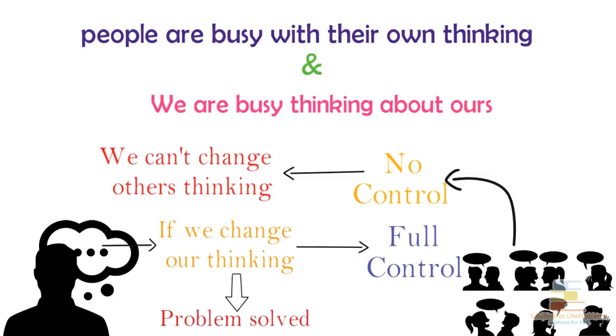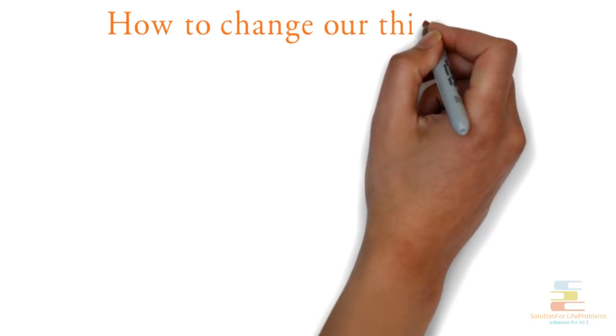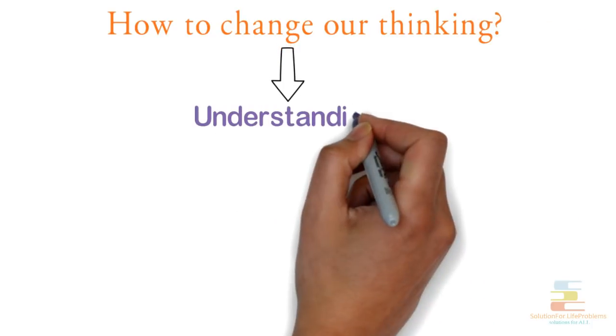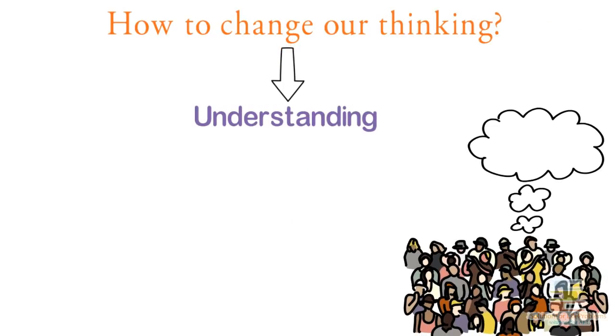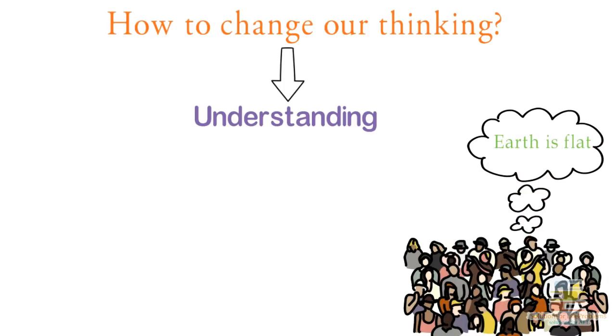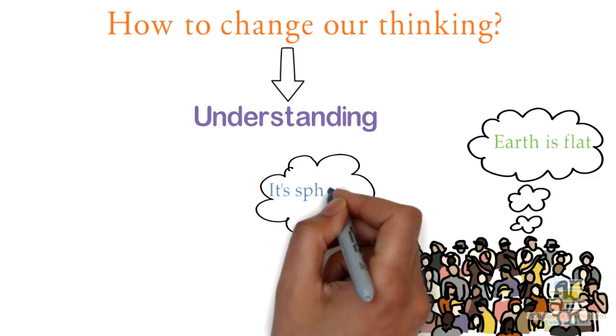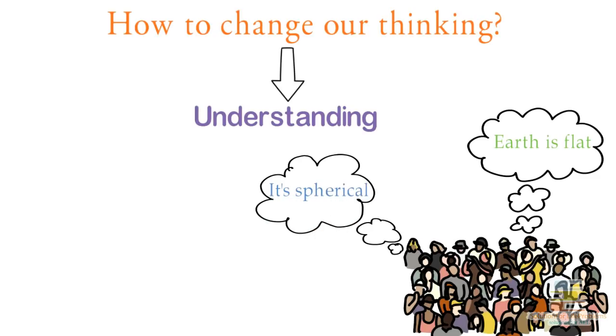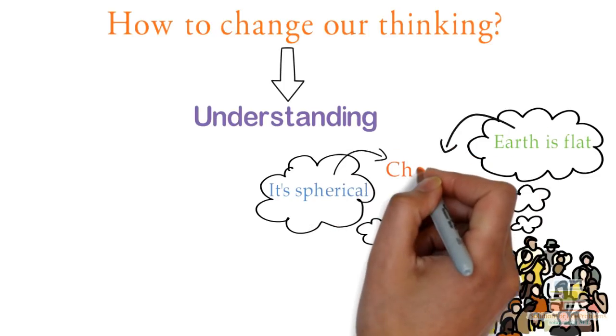Because if we can change our own thoughts where we have the full control, we can solve this problem easily. Now the question comes, how to change our thoughts? So thoughts are changed by our understanding. When people used to think that the earth is flat, then they were thinking about it from one perspective. But as soon as they realized that it is spherical not flat, they started looking at it from different perspective and their way of thinking also got changed.